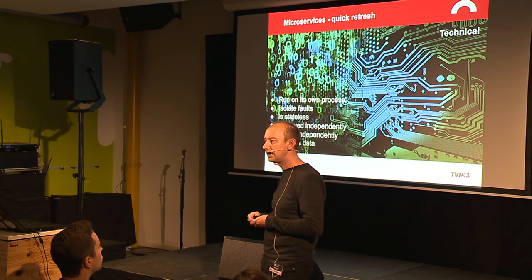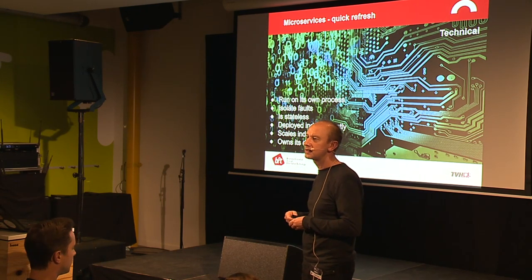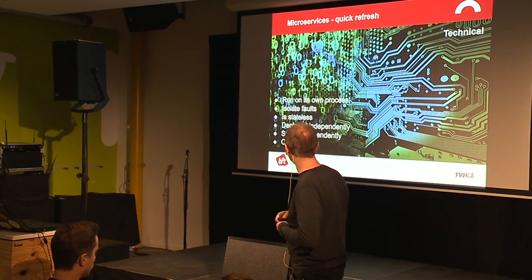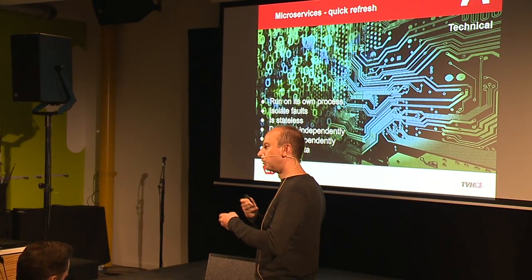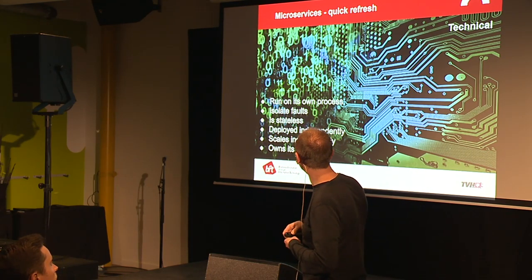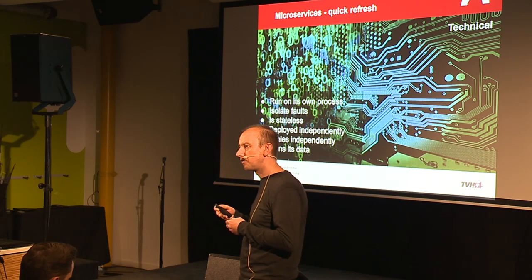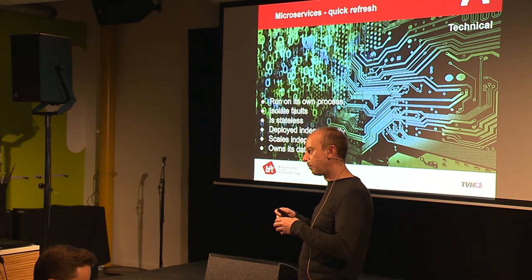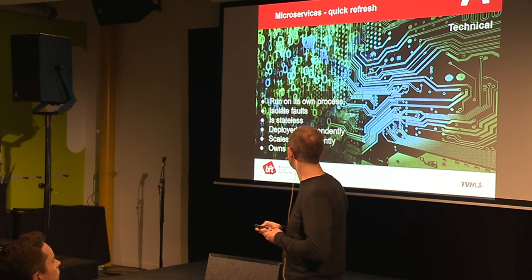For us, a microservice is a piece of code that stands on its own. It runs in its own process, it has its own data, it's built stateless — for scalability reasons, obviously. It's deployed independently — very important. You want to move fast in microservices, so each service should have its own lifecycle. And it isolates faults, meaning if you have multiple microservices depending upon each other, you should be able to operate even if something is wrong with your dependencies. Very important.